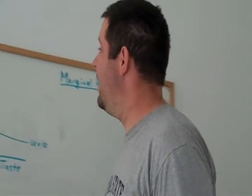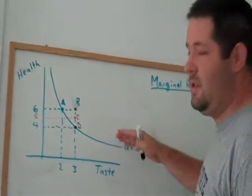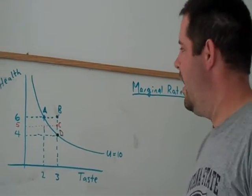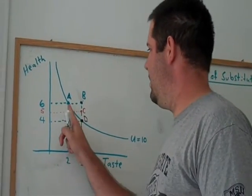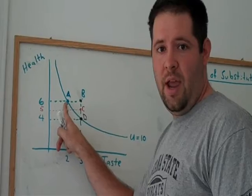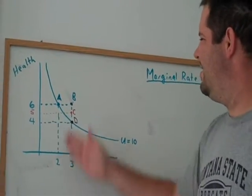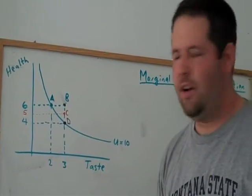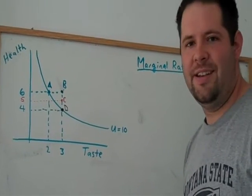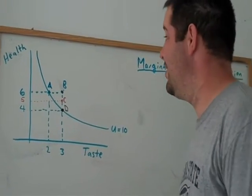Specifically, I want to think about the slope of this indifference curve at any given point. Specifically, I want to think about the slope at point A. Now, you'll notice that this indifference curve is curved, just as the name says it is. It's an indifference curve.